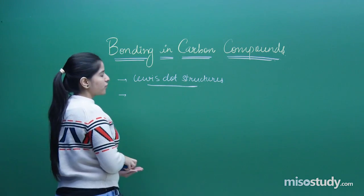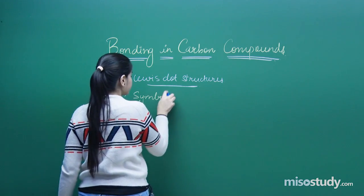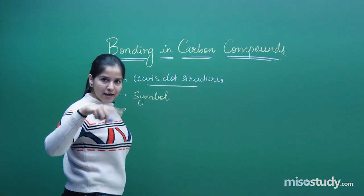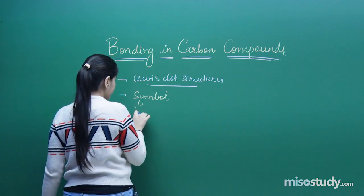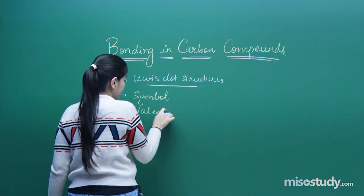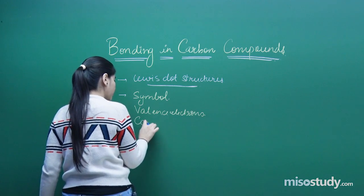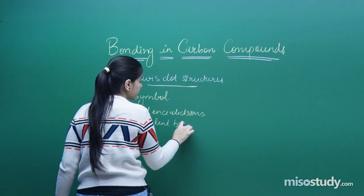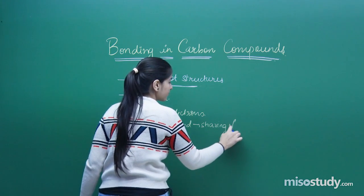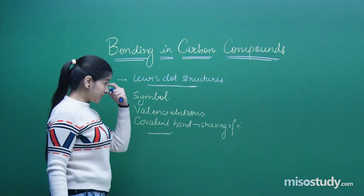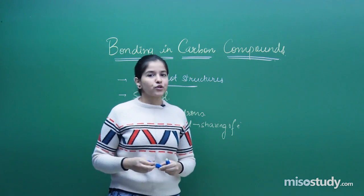In Lewis dot structures, what we need to remember is: first, the symbol of the element; second, around the symbol we need to represent the valence electrons — just the valence electrons; and third, we need to show the covalent bonding by sharing. These are the three things to keep in mind while representing Lewis dot structures of covalent compounds.